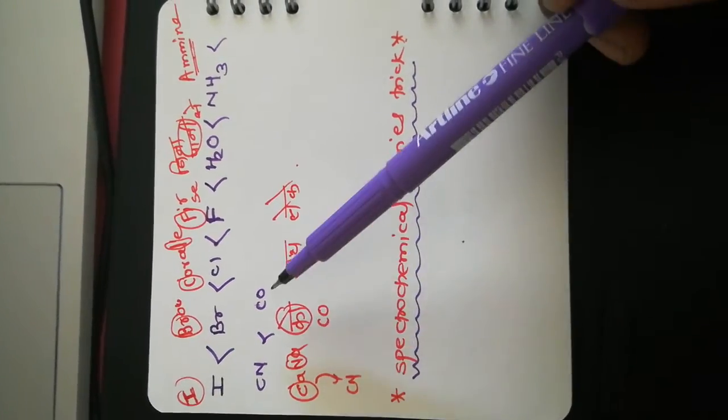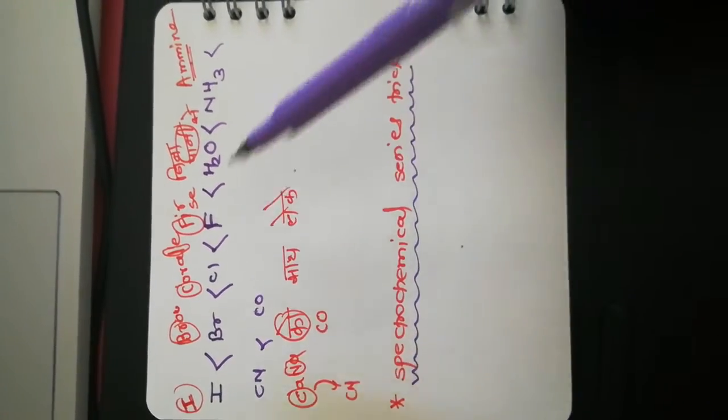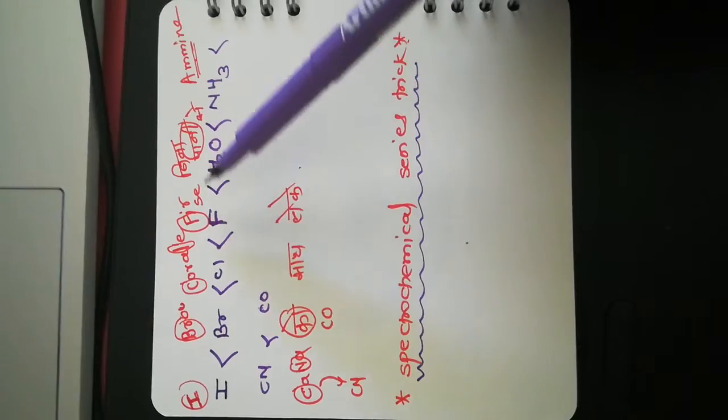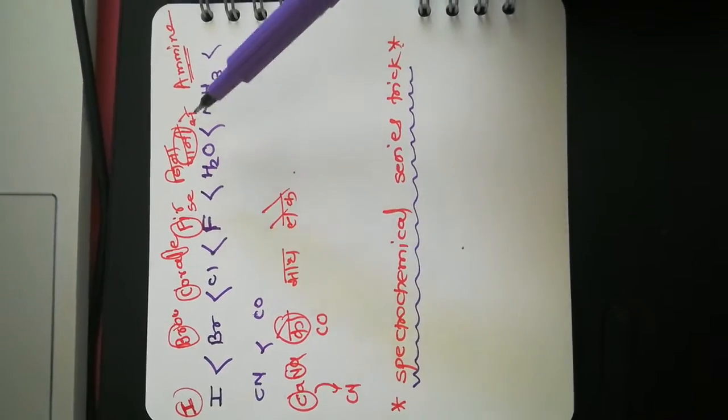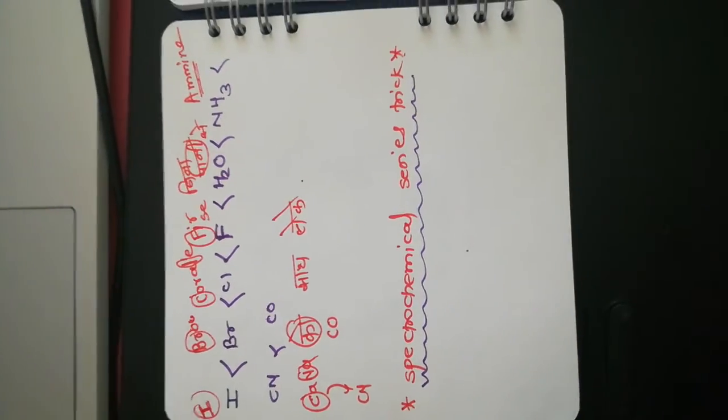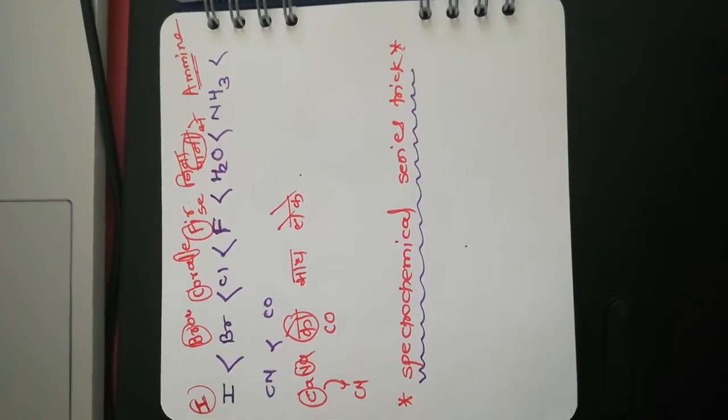So remember: I broke corley, fir se, bina paani se, ammine, sanako, saath leke. This covers the full spectrochemical series in order. Thank you.